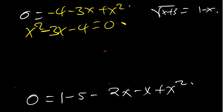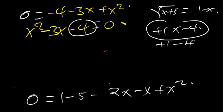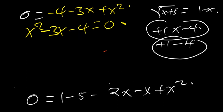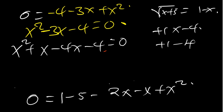So we need two numbers that when added give negative 3 and when multiplied give negative 4. If we try positive 1 and negative 4: 1 times negative 4 is negative 4 ✓, and 1 plus negative 4 is negative 3 ✓. So the two numbers are negative 4 and positive 1. We split the middle term: x squared plus x minus 4x minus 4 equals 0.